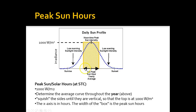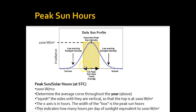Because the x-axis is hour of the day, however wide this box is indicates how many hours you are at 1,000 watts per meter squared — so that's your peak sun. It's fairly difficult to do this mathematically, but this sort of explains how you can think about it. So this is how many hours per day — in this case it's about 5.5 hours at 1,000 watts per meter squared.